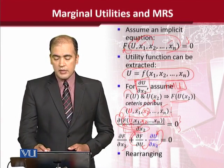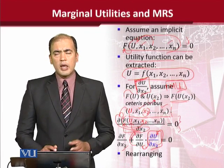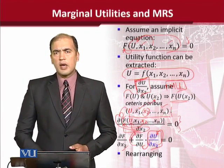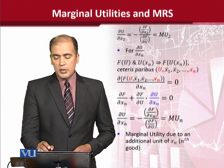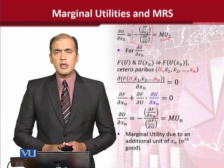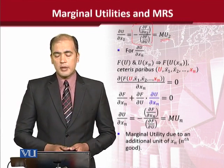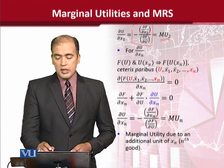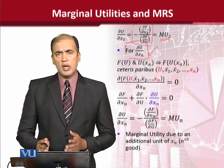Because we are in search of this value — the marginal utility with respect to the second good — a simple rearrangement gives us the value. And this is that value: the marginal utility with respect to the second good is now calculated. In the same way we can do it for the nth good, that is the last good.